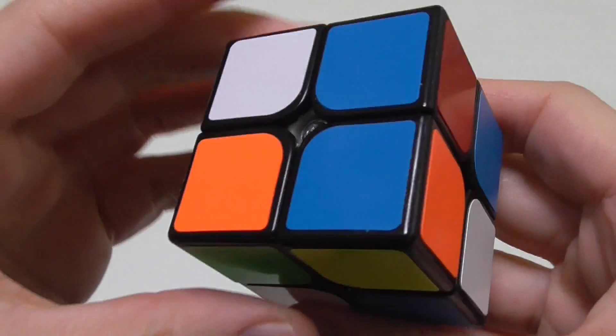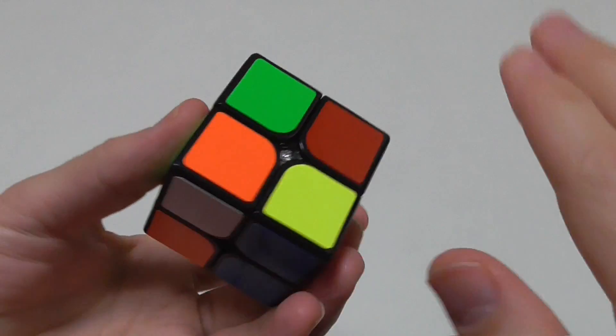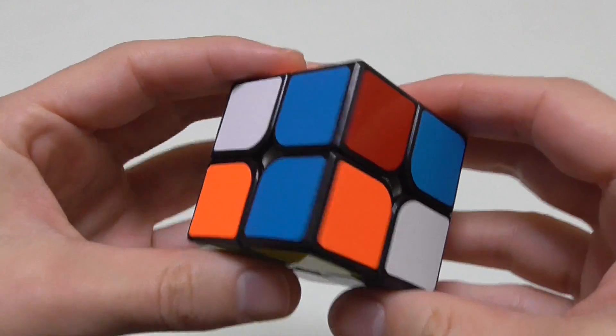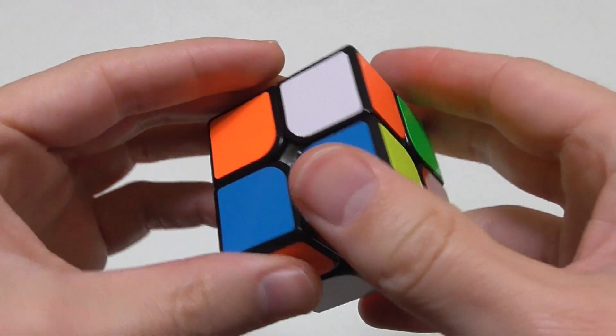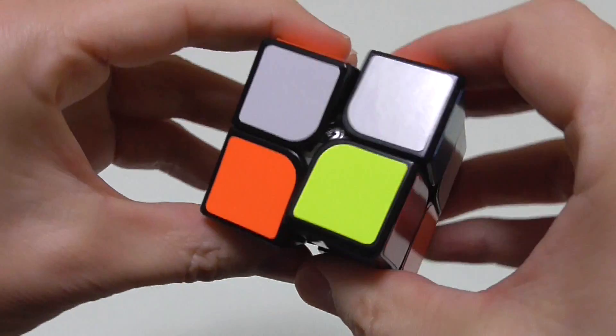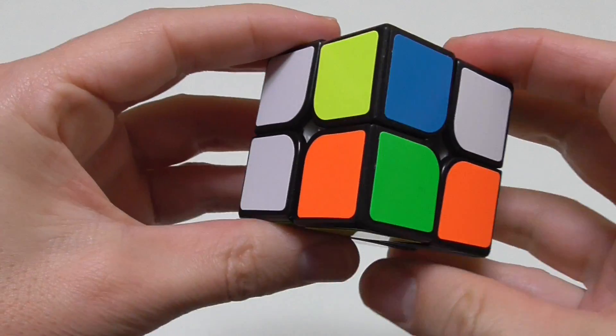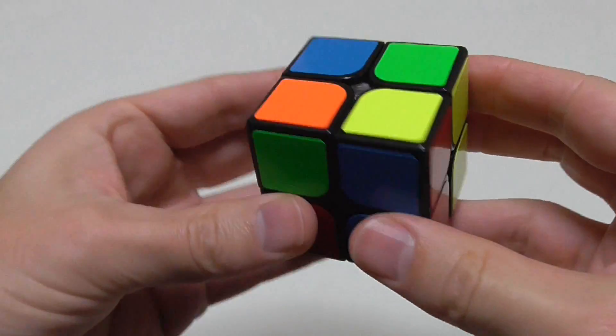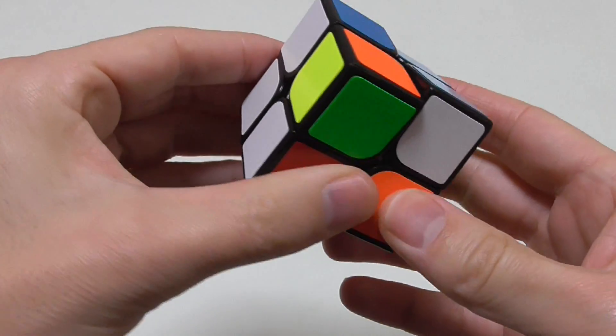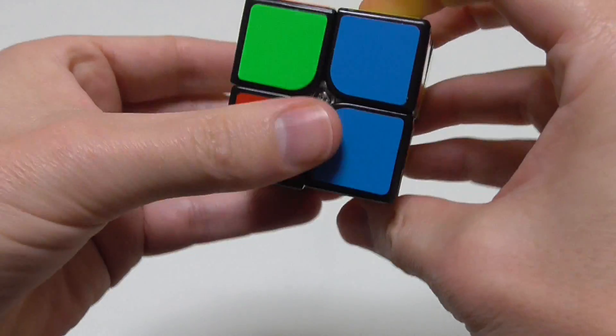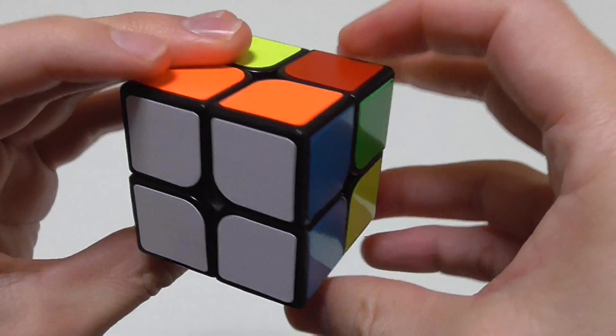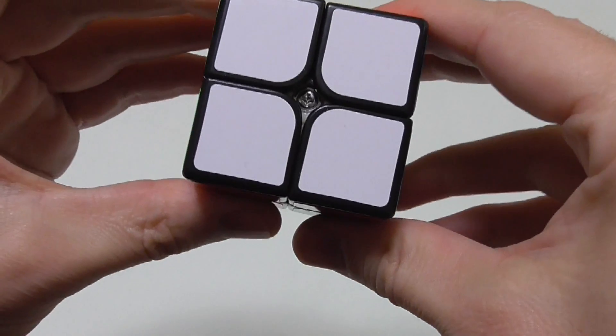The first step in solving a 2x2 Rubik's Cube is to solve one face. And usually it's the white face, just by convention. And there is an algorithm you can follow to get the white face. But I think it's pretty simple. You just visually match it up. And it might take you a while. But rather than an algorithm, I think it's easier just to sort of work it out. There you are. There's the white face done. So that's step one, is to solve the white face.